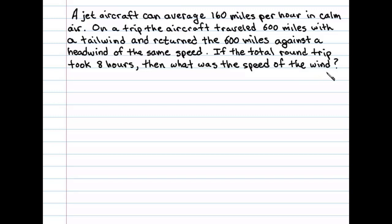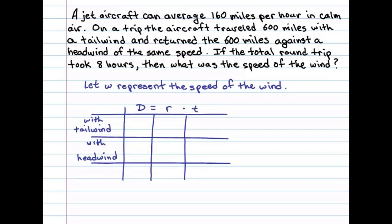Let's begin by identifying our variable and organizing our data in a chart. Here, we'll let W represent the speed of the wind. And we know distance equals rate times time, and there are two legs to this trip. If the aircraft can average 160 miles per hour in calm air, then the aircraft's speed with a tailwind will be 160 miles an hour plus the speed of the wind. The speed of the aircraft with a headwind will be 160 miles an hour minus the speed of the wind.